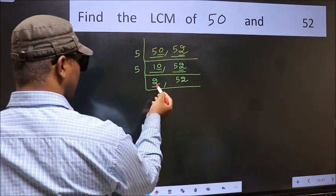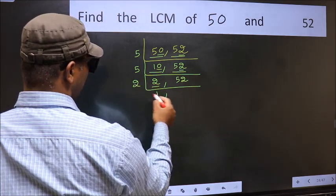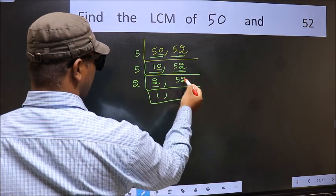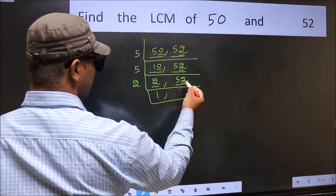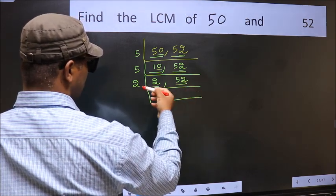Now here we have 2. 2 is a prime number, so 2 times 1 is 2. The other number, 52. Last digit is 2, even, so this is divisible by 2.